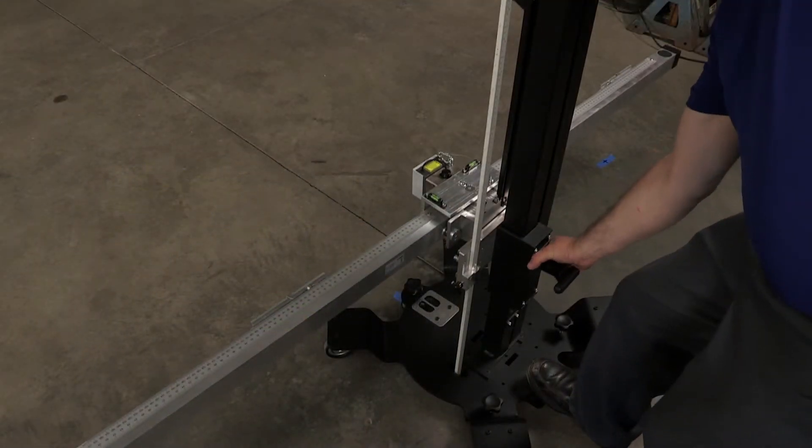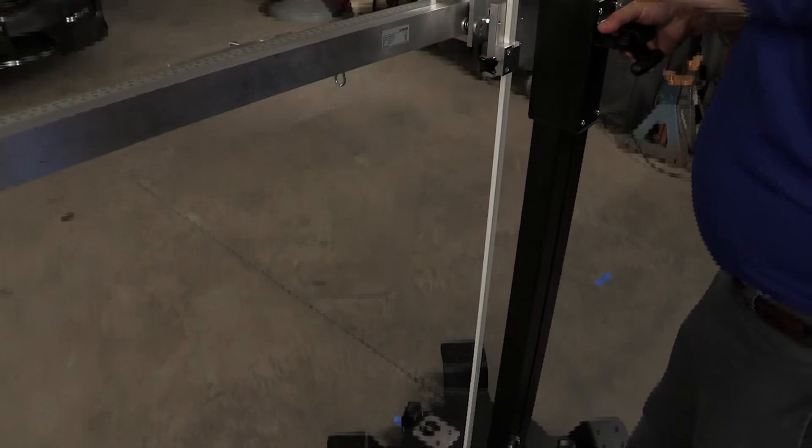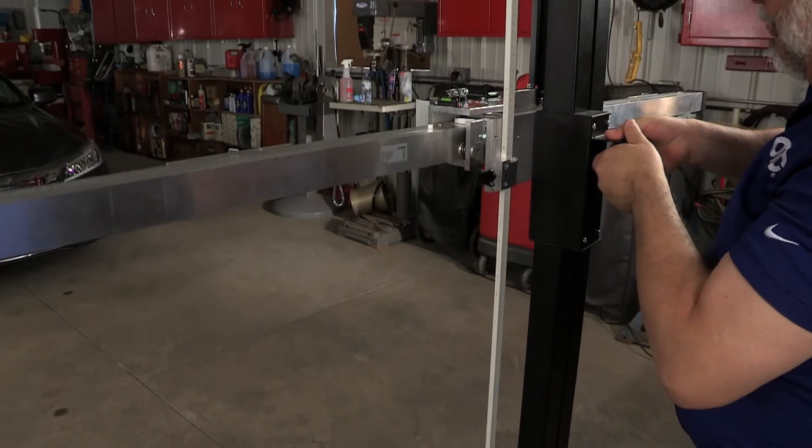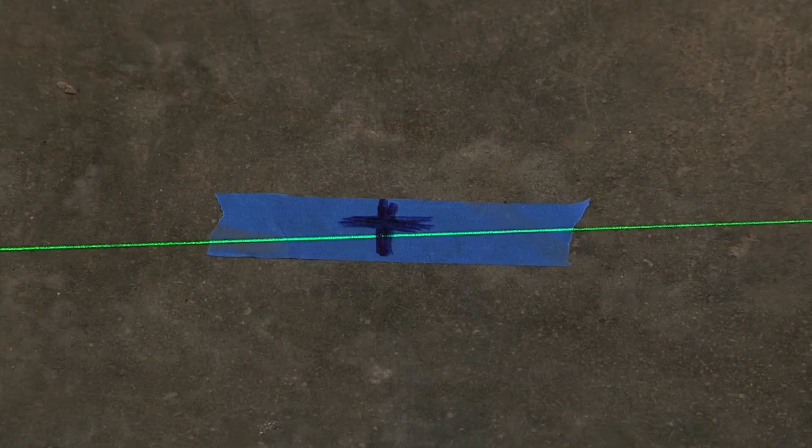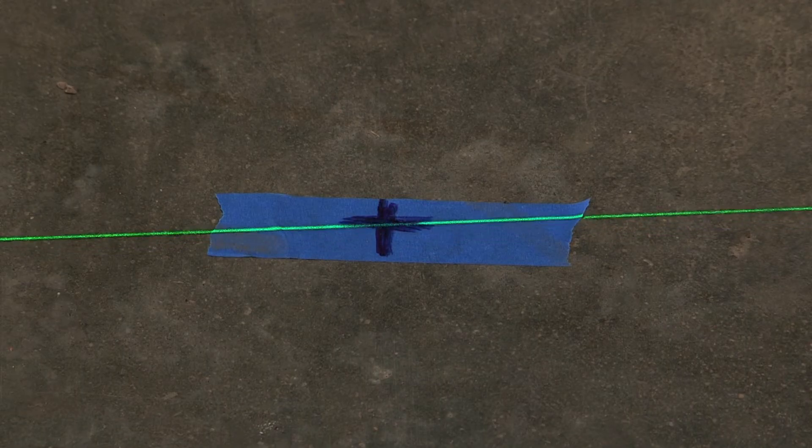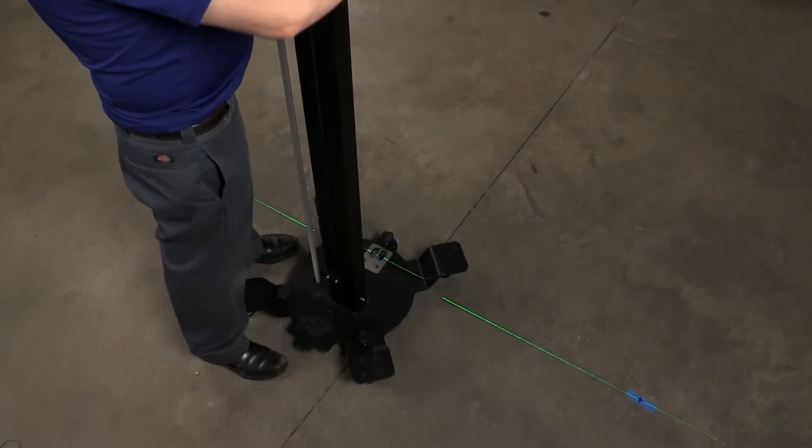Now we are going to center the target stand to the vehicle using the laser. To do that, we are going to bring the horizontal target bar up. Turn the angle setting screw to better align the laser to your reference marks. Make sure that both reference marks are aligned to the laser.